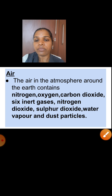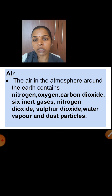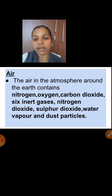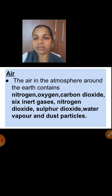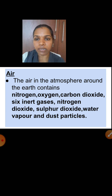The air in the atmosphere around the earth contains a mixture of gases. See here — it contains nitrogen, oxygen, carbon dioxide, six inert gases, nitrogen dioxide, sulfur dioxide, water vapor and dust particles.